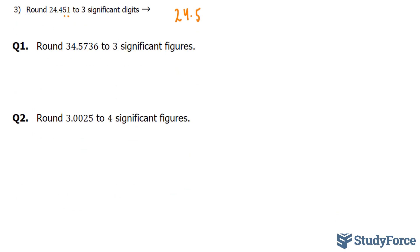The first question reads, round 34.5736 to three significant figures. Three significant figures would lead up to here. And everything after that 5, such as the 7, 3, and 6, will go away.